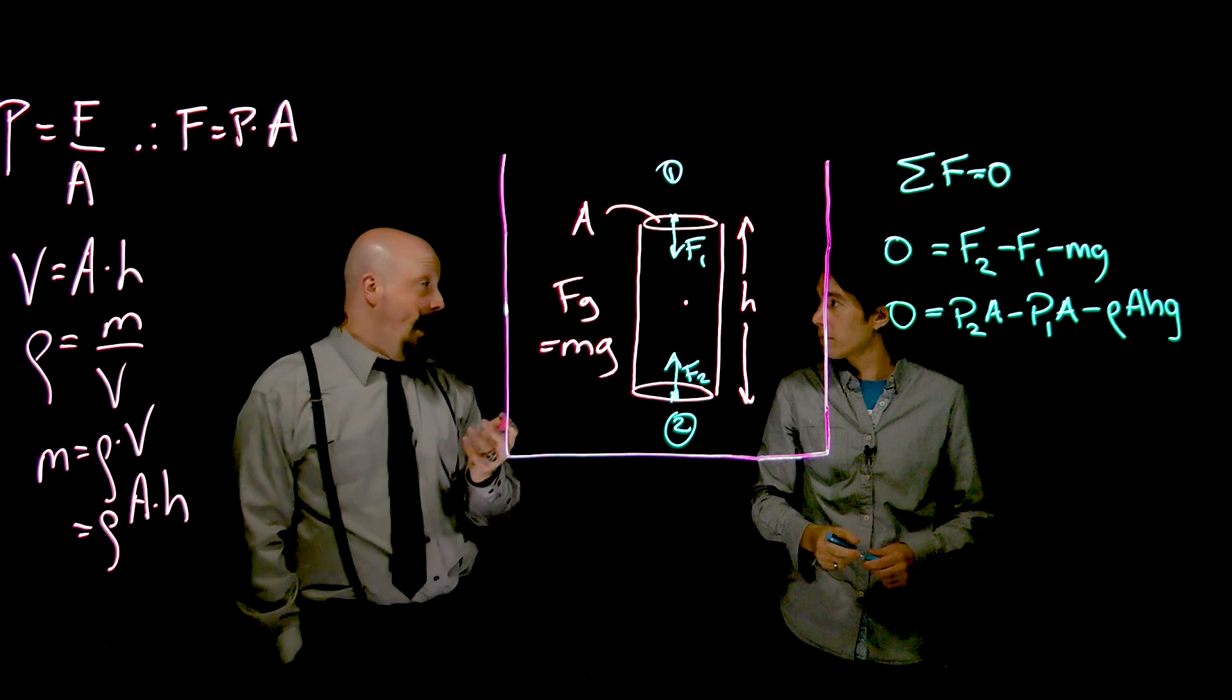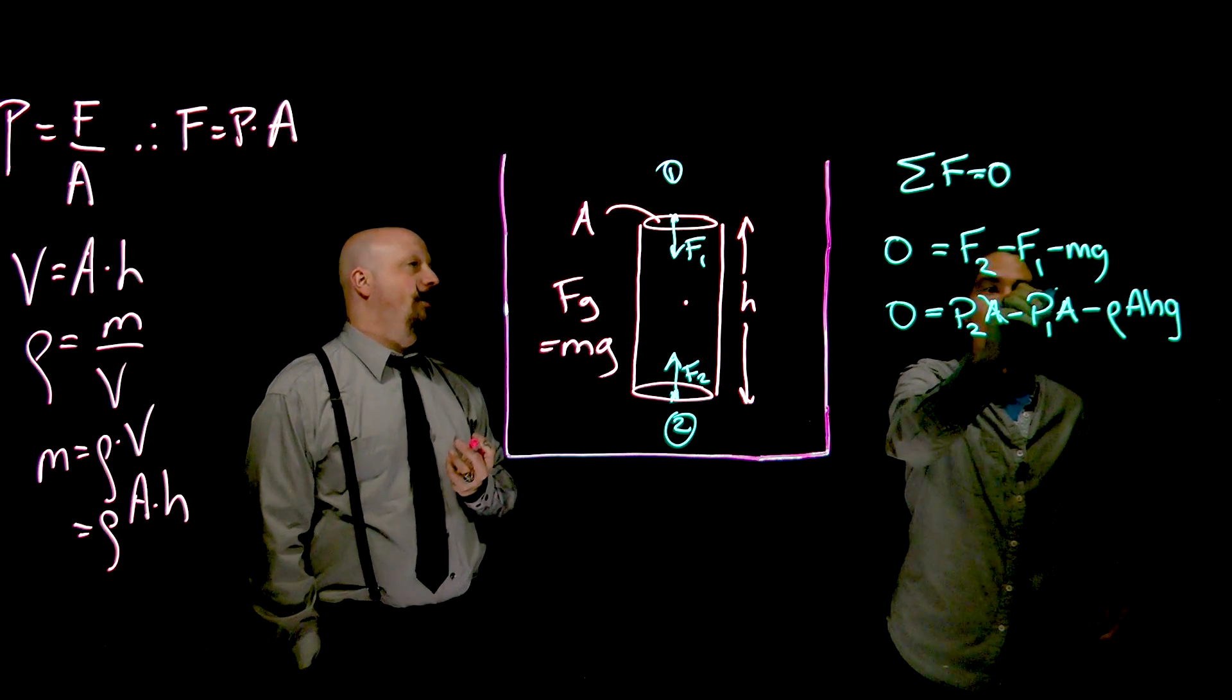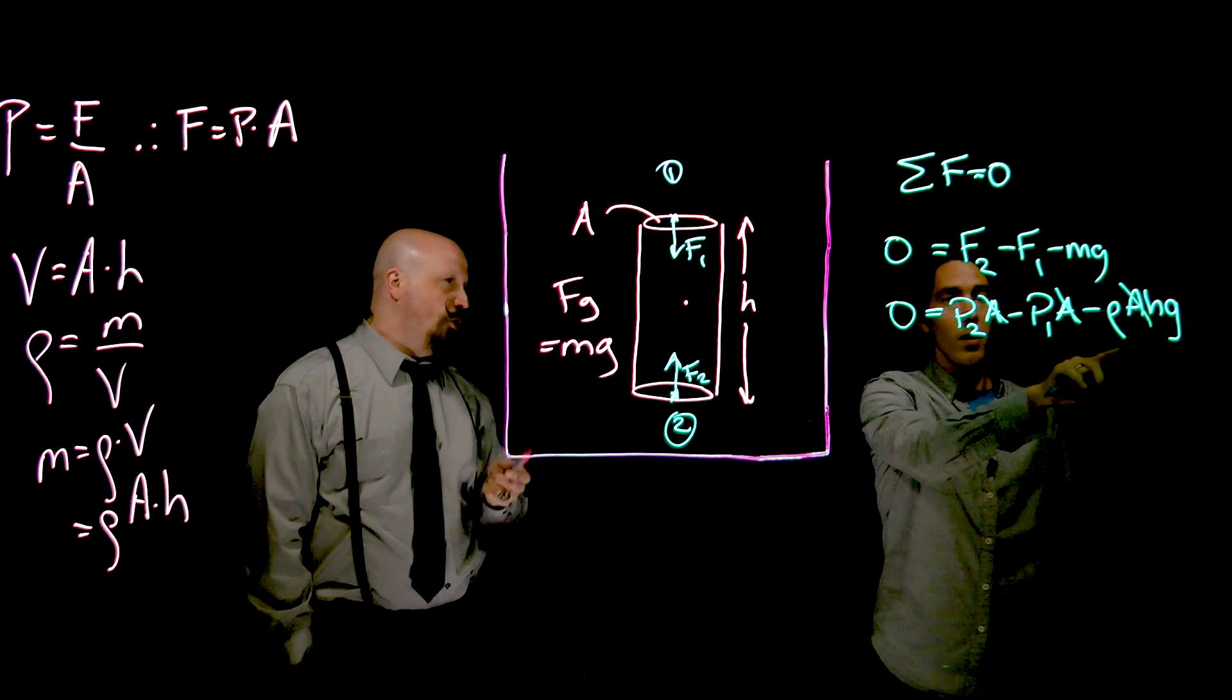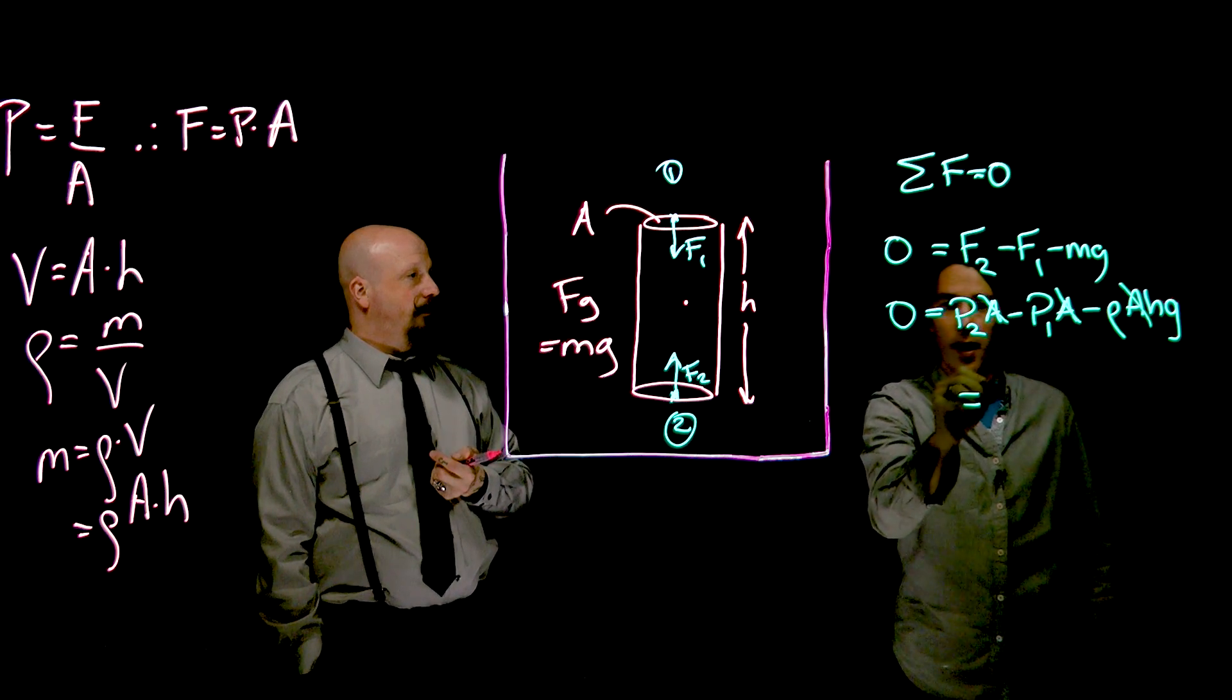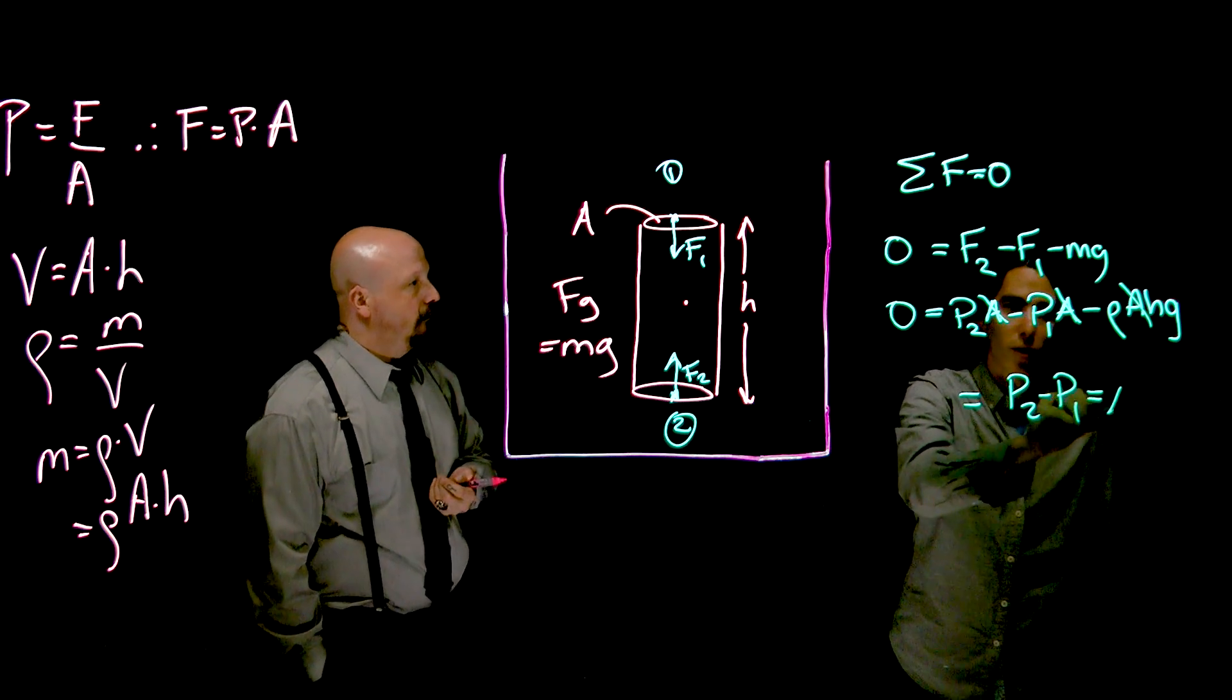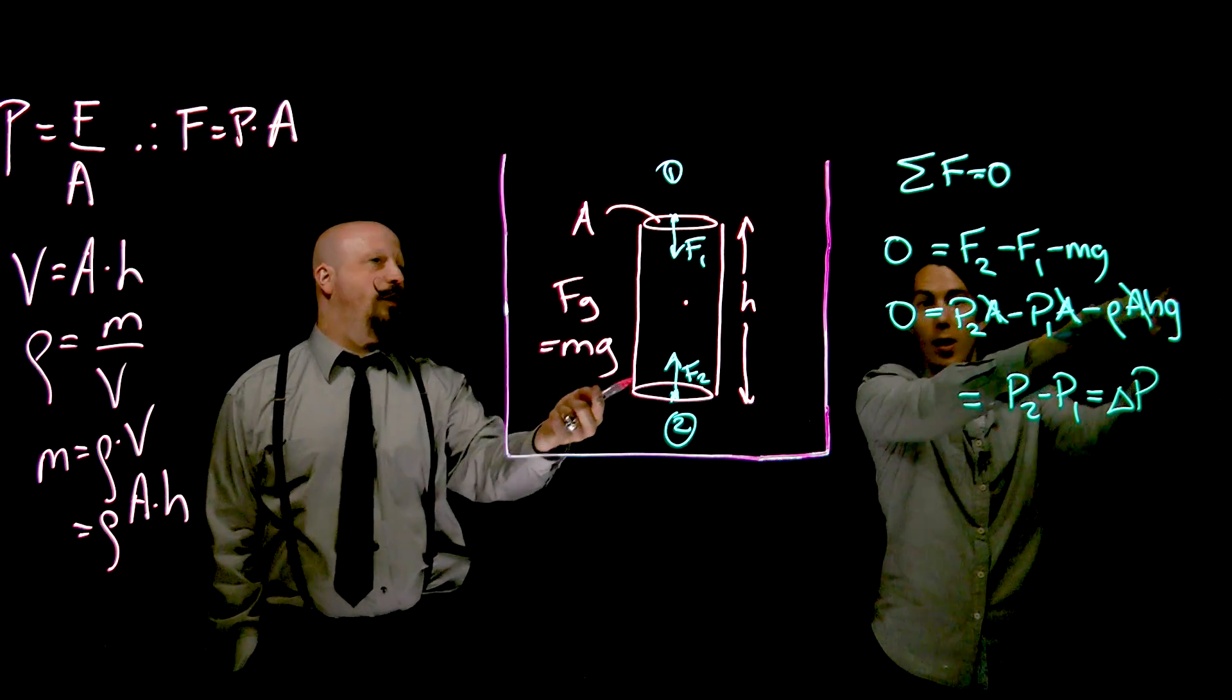So right away, you could divide the whole thing by A. Get rid of those cross-sectional areas. And that allows us to now rewrite the change in pressure, P2 minus P1. We often talk about that as a change in pressure. Let me call that delta P, the difference between here and here.